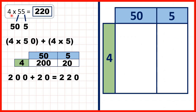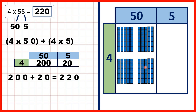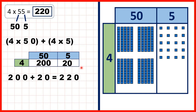So now let's take a closer look at the first question. We had 4 times 55. On our grid, we partitioned 55 into 50 and 5. So for 4 times 50, we can show 50 four times, and that gives us 20 tens, so 200. Then for this box here, we can show 4 times 5 — so 5 four times — and that gives us 20. So altogether we get 220.